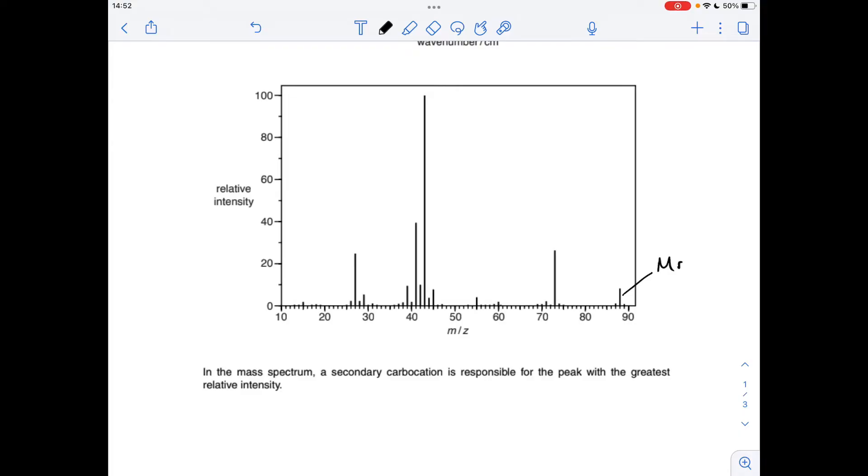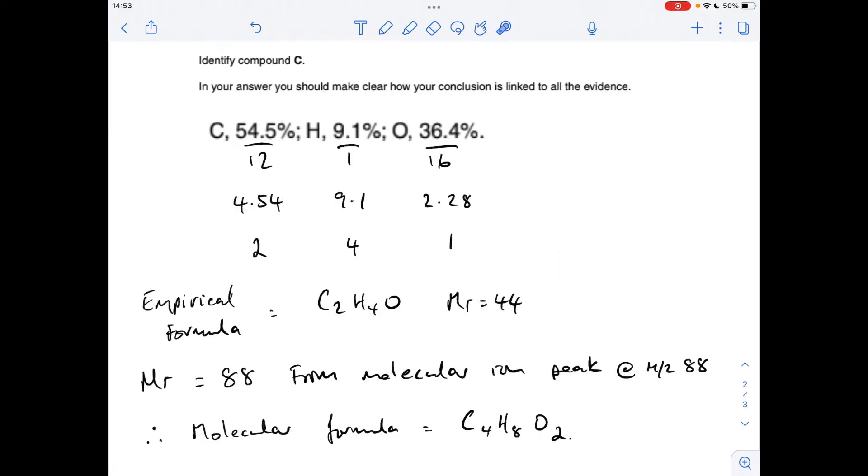So we now know that the Mr of this is 88, but the empirical formula mass was 44, so in other words half as much. So the molecule must have twice as many atoms in as the empirical formula, so therefore the molecular formula must be C4H8O2.